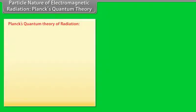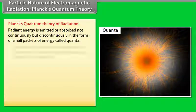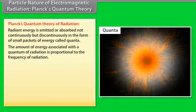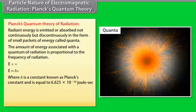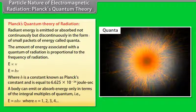Planck's Quantum Theory states that radiant energy is emitted or absorbed not continuously but discontinuously in small packets called quanta. The energy associated with a quantum is proportional to the frequency of radiation: E = hν, where h is Planck's constant = 6.625 × 10⁻³⁴ joule·second. A body can emit or absorb energy only in integral multiples of a quantum: E = Nhν, where N = 1, 2, 3, 4, etc.